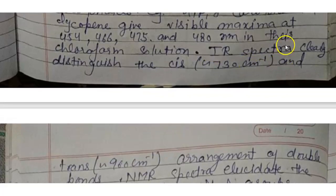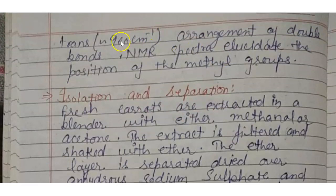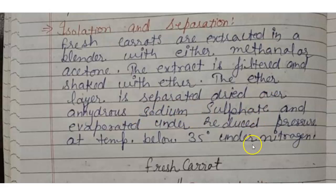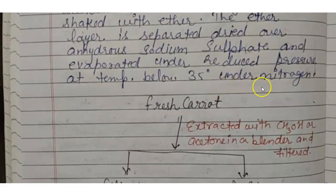Infrared spectra clearly distinguish cis (730 cm⁻¹) and trans (approximately 960 cm⁻¹) arrangements of double bonds. NMR spectra elucidate the position of methyl groups. For isolation, fresh carrots are extracted in a blender with either methanol or acetone; the extract is filtered and shaken with ether. The ether layer is separated, dried over anhydrous sodium sulfate, and evaporated under reduced pressure at a temperature below 35°C under nitrogen.